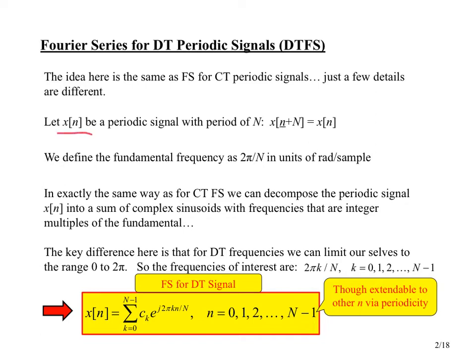It's basically the same idea as for continuous time periodic signals. We've got some signal x of n, and it's periodic with period capital N if x(n) = x(n+N) holds true for all values of little n. We have a period of capital N samples, and if we take 2π and divide it by the period, we get the fundamental frequency in units of radians per sample — 2π over N radians per sample.